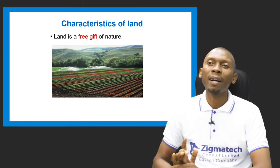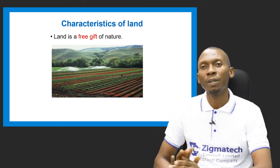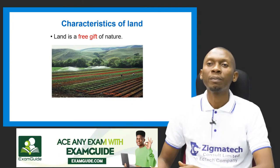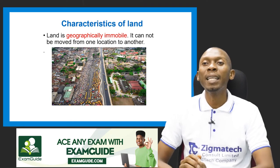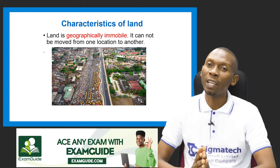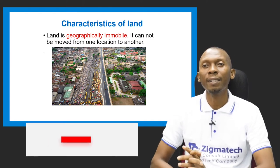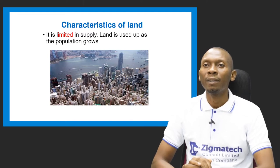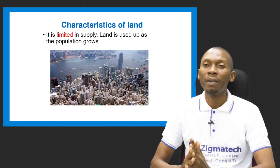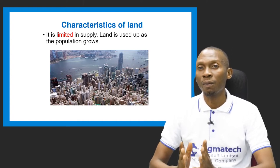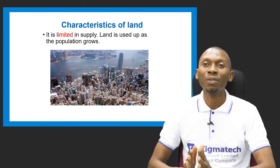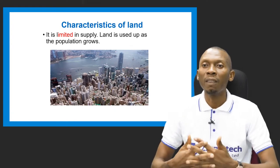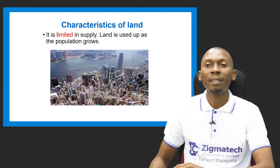What are the characteristics of land? First, land is a free gift of nature. It is geographically immobile — you cannot move land from one location to another. Land is also limited in supply, as about 70% of the earth is covered with water and only 30% is land. As the population grows, the available land is also used up.